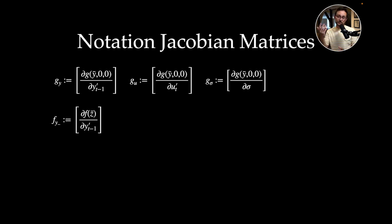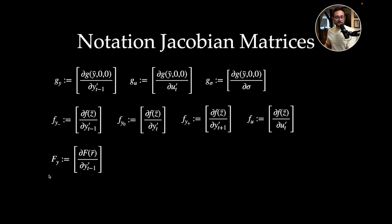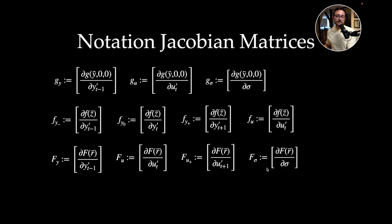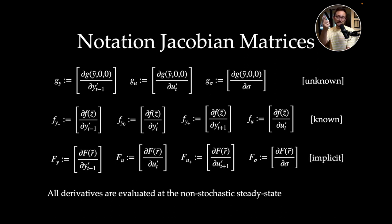The same notation applies for partial derivatives of the model equations: fy- with respect to previous model variables, fy0 with respect to current, fy+ with respect to future, and fu with respect to shocks. We have implicitly defined uppercase F with four arguments. Let's take the derivative with respect to yt-1, with respect to ut, u+, and sigma — all evaluated at the non-stochastic steady state. The unknown matrices are gy, gu, g_sigma, while the model derivatives are known since we wrote down the function.